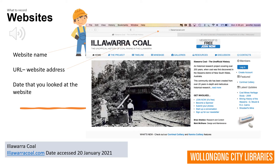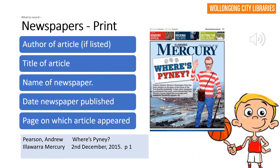What do we need to record if we've used a website as part of our research? There are three things we need to record. Here's an example: we need to record the name of the website — in this case it's called Illawarra Coal — we need to record the web address or URL, which is written in the address bar at the top of your computer, and then we need to record the date that we looked at the website, because websites can change over time.